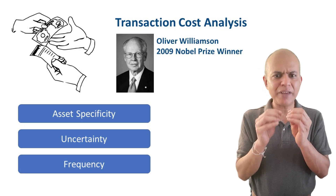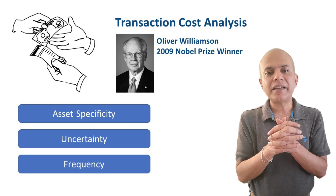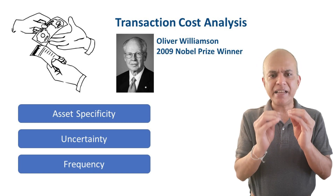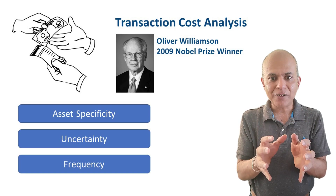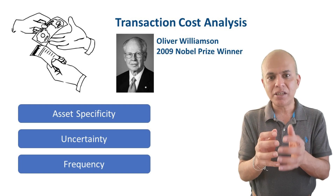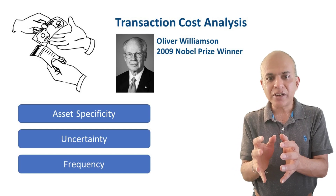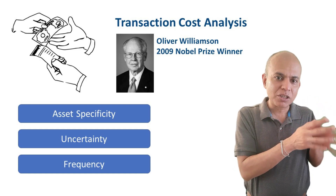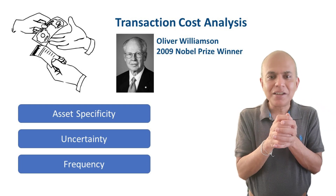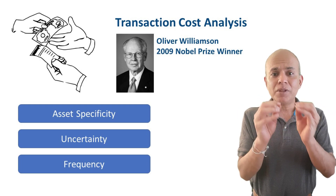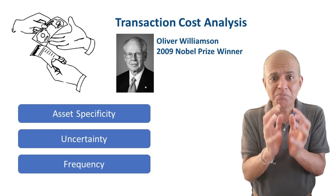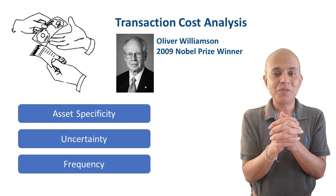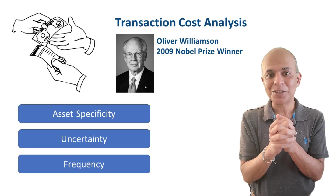When a process is very certain — consider transporting something from A to B — you can create very definite contracts specifying weight, category, condition of material, pickup and delivery addresses, and loading or unloading facilities. The contract is close to complete, making transportation a very good case for outsourcing.